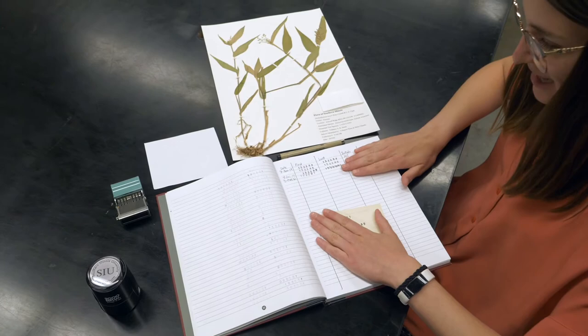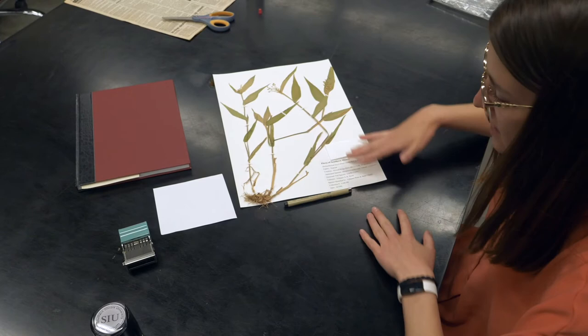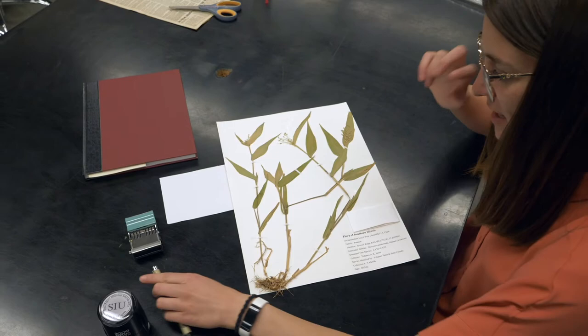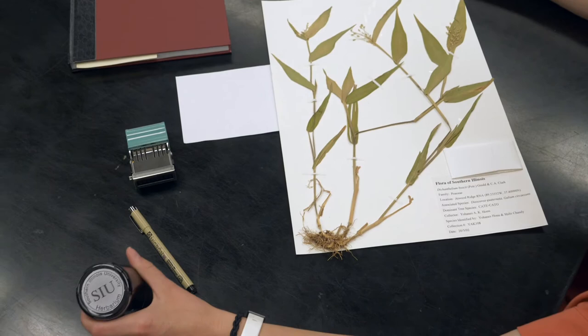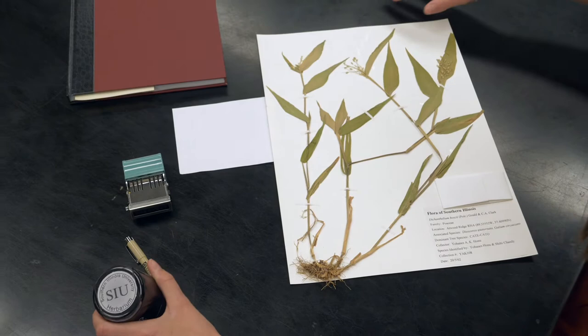Once you've made your record in the accession book, close that, we're done with this. Now it's time to move on to the specimen. As previously mentioned during the mounting video, we want the accession seal to be in the top. It doesn't necessarily have to be the top right, but that's where we're going to place it today because we have this nice space here.